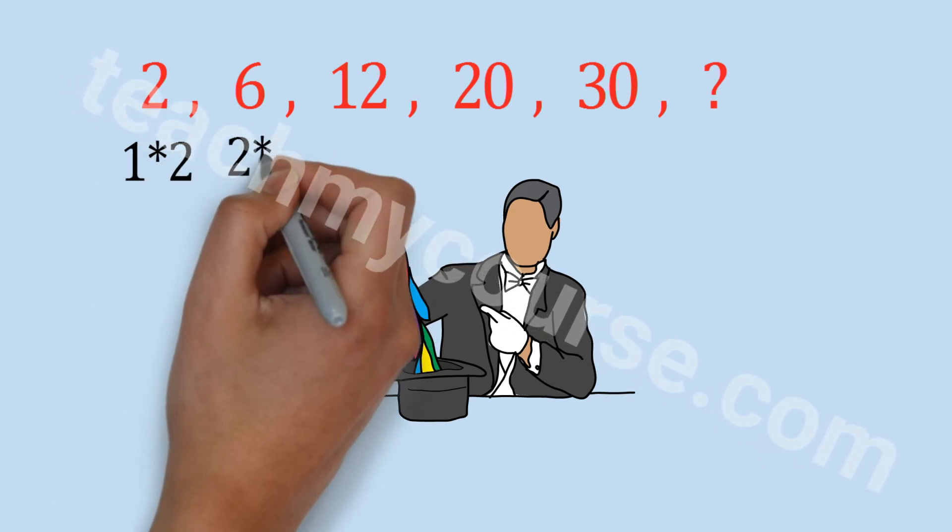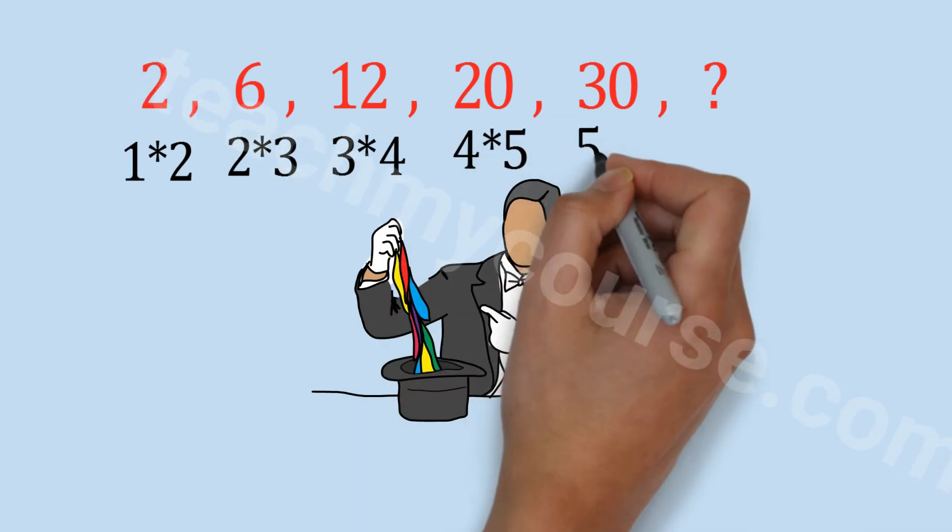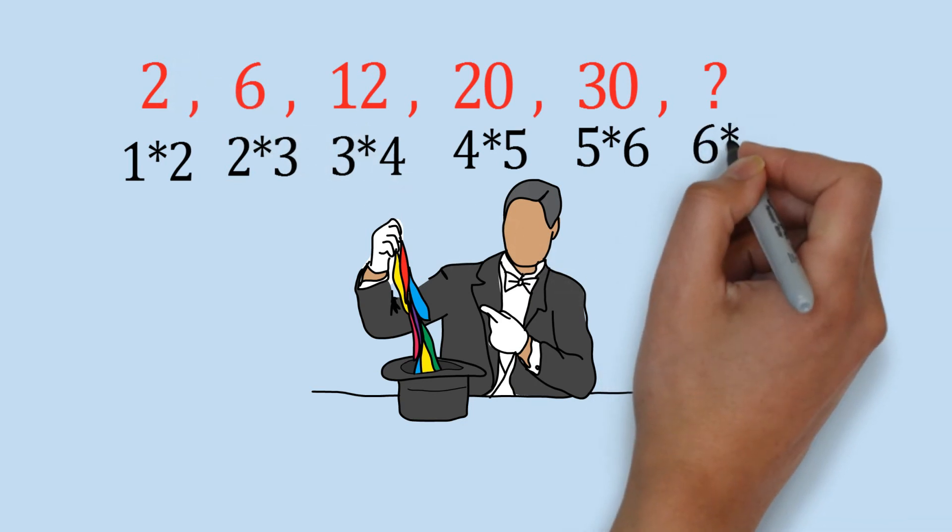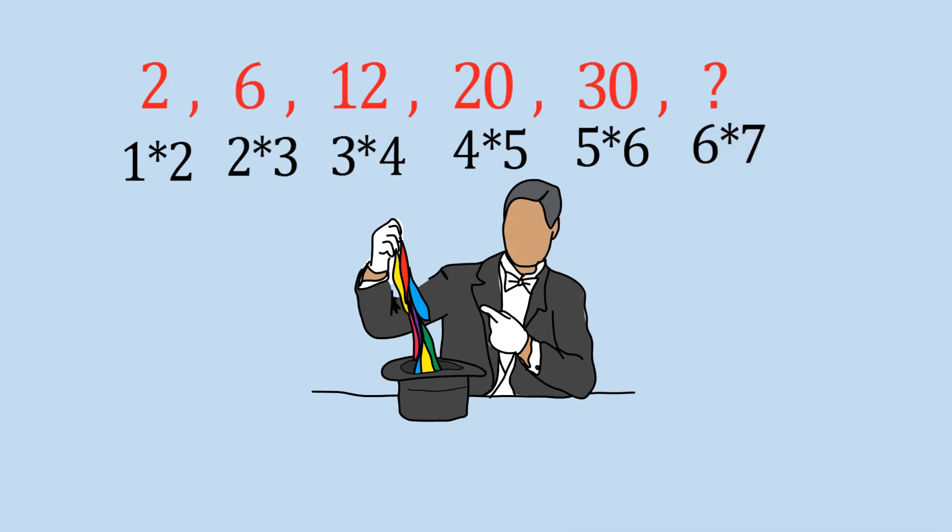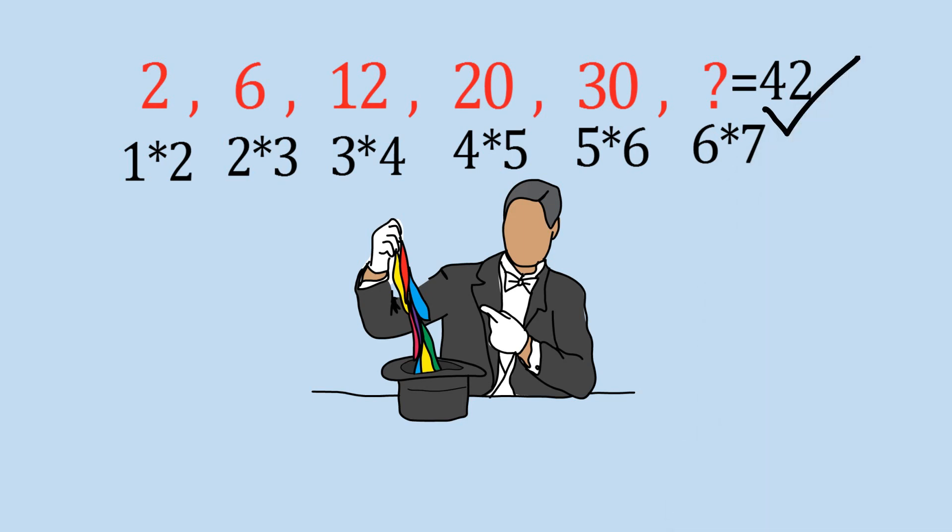The first number is 2, which is 1 into 2. Next is 6, which is 2 into 3. Next is 12, which is 3 into 4. Next is 20, which is 4 into 5. Next is 30, which is 5 into 6. So clearly the product of 2 adjacent numbers is being shown here, so next will be 6 into 7, that is 42. That's how simple it is if you are familiarized with all these techniques and patterns of number series.